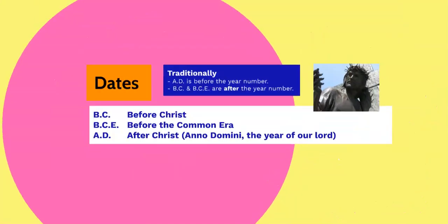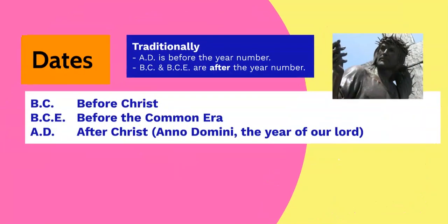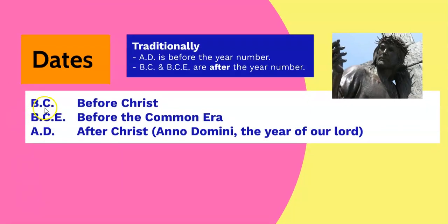When talking about dates before or after the birth of Christ, we often use full stops. B.C. stands for before Christ. B.C.E. stands for before the common era — B.C.E. is an alternative way of writing the date if you're not Christian. A.D. means anno domini, in other words, after Christ was born.